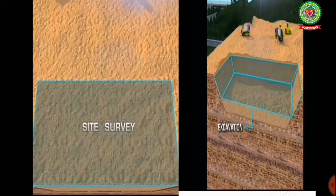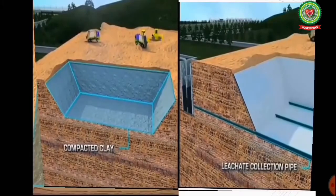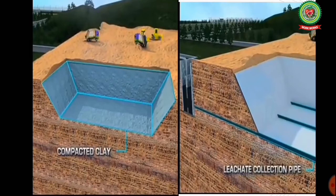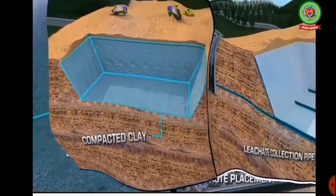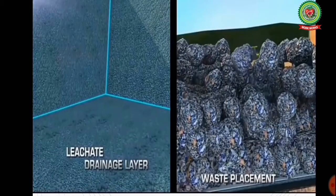After selecting the site of the landfill, excavation is done. After excavation, a layer of compacted clay is formed at the excavated site. Then leachate collection pipes are installed — as you can see in this picture, the black pipes are the leachate collection pipes. After installing the leachate collection pipes, a drainage layer is formed and finally the waste is placed into the landfill.